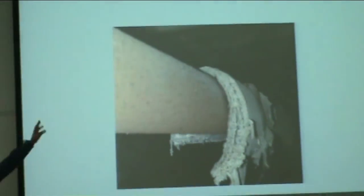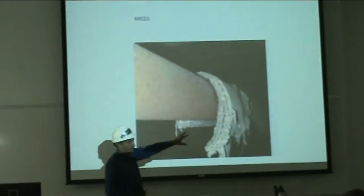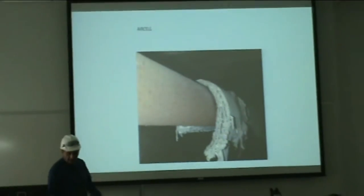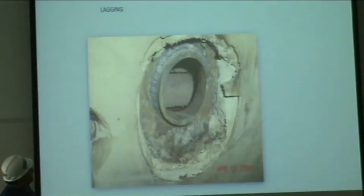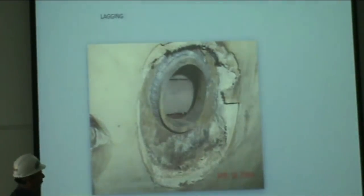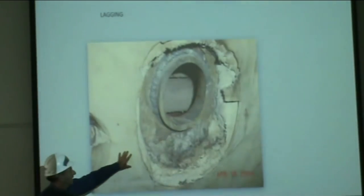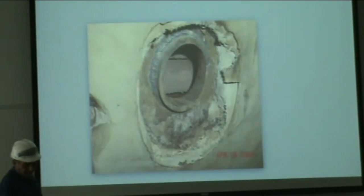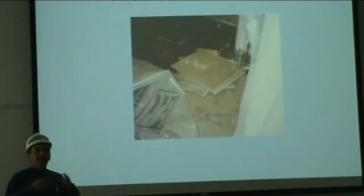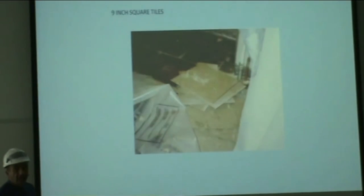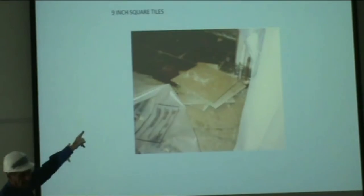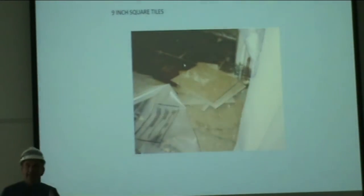They still use some of it here, but they're trying to phase it out. Air cell is found in pipes and homes — it looks like cardboard with some honeycomb texture. Then you have lagging, which is what they cover the pipes with in boiler rooms. You also have 9-inch tiles on the floors of buildings, and the glue used to attach them also contains asbestos. And then we have spray-on asbestos — when you remove that, you really have to suit up and do a lot of work, which increases the cost.